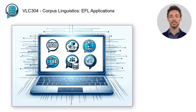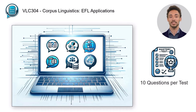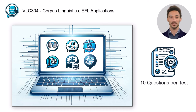All 6 units of VLC 304 contain a mastery test with at least 10 questions each. To pass the course and to be awarded the statement of accomplishment, you have to get at least 70% of all questions right.